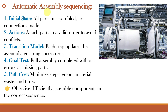The next example is automatic assembly sequencing, whose main objective is to efficiently assemble components in the correct sequence. We have to specify an order in which to assemble the parts of an object. If the wrong order is chosen, there will be no way to add some part later in the sequence without undoing some of the work that is already done. The goal is full assembly completed without errors or missing parts.